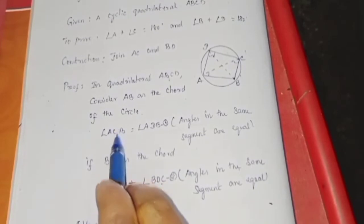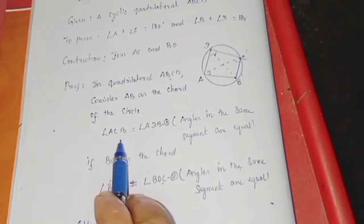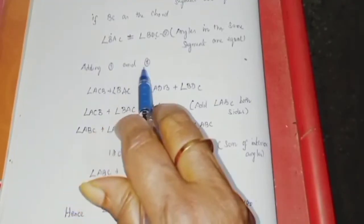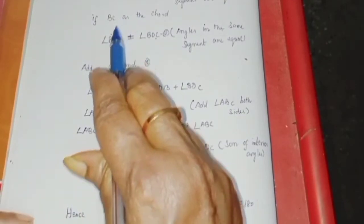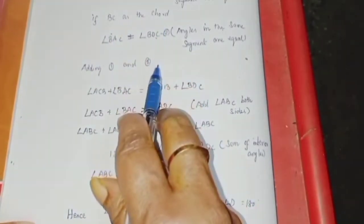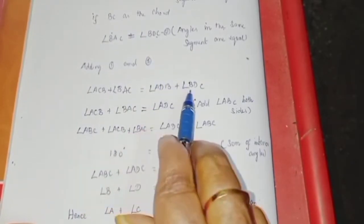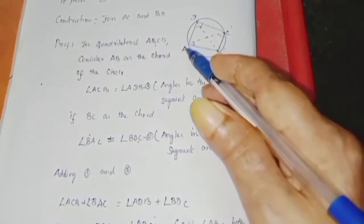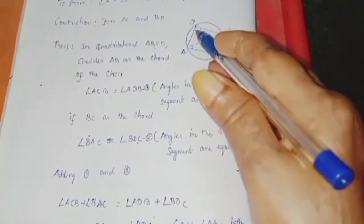Now we add the left-hand sides of equations 1 and 2: angle ACB plus angle BAC, and angle ADB plus angle BAC, to get angle ADC.